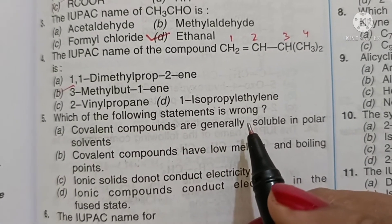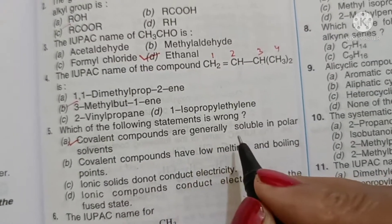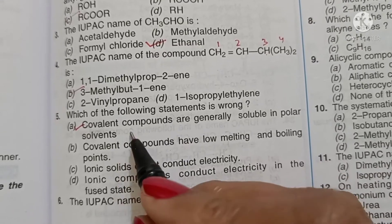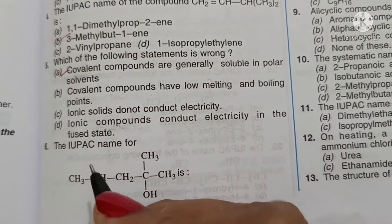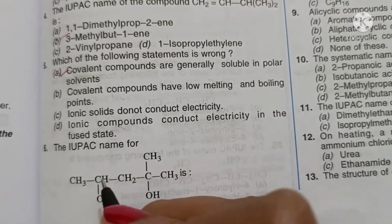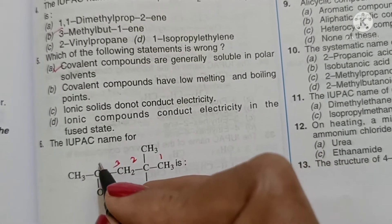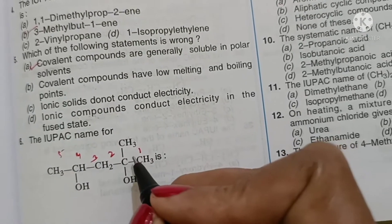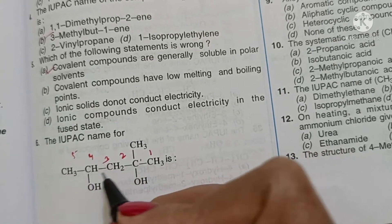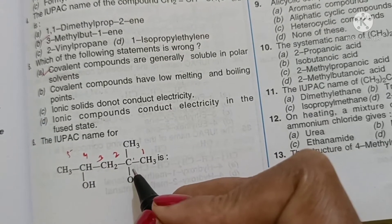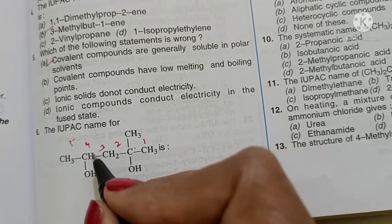Which of the following statement is wrong? Option A, covalent compounds are generally soluble in polar solvents is wrong - they are soluble in non-polar solvents. IUPAC name for this compound, we number from here, so we have 2-methylpentane-2,4-diol.